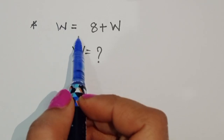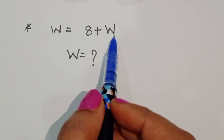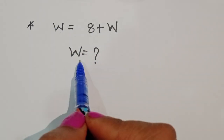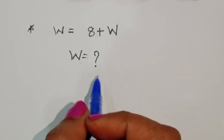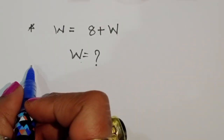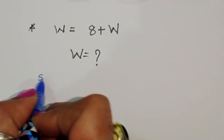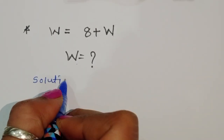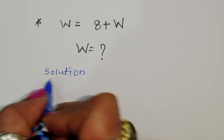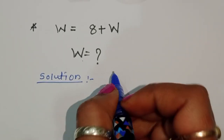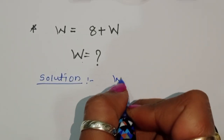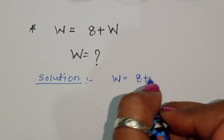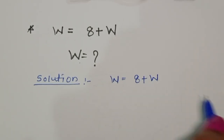We are given √w = 8 + w, so we have to find out the value of w. Let's see the solution: √w is equal to 8 plus w.